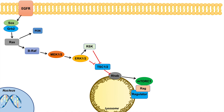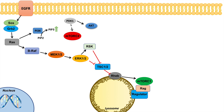RAS itself can also bind to and activate PI3 kinase. When PI3 kinase is activated, it phosphorylates phosphatidylinositol diphosphate into phosphatidylinositol triphosphate — PIP2 to PIP3. Increased PIP3 concentrations recruit PDK1 and AKT toward the cell membrane. PDK1 then activates AKT through phosphorylation, and PDK1 also leads to the activation of mTOR complex 2.